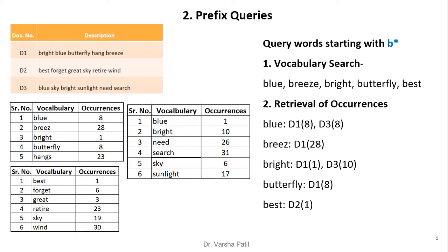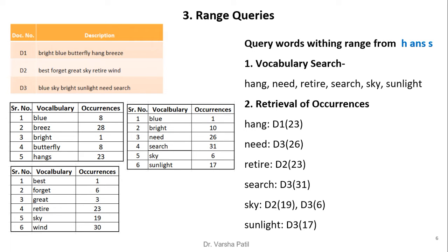Prefix queries find words that start with a particular prefix. For example, query 'b*' uses a wildcard, requiring a search for all documents containing keywords starting with 'b'. Using the inverted file index on documents d1, d2, d3, we retrieve from the vocabulary: blue, breeze, bright, butterflies, best, etc. The retrieval of occurrences shows these words present across d1, d2, and d3, so all three documents are returned.